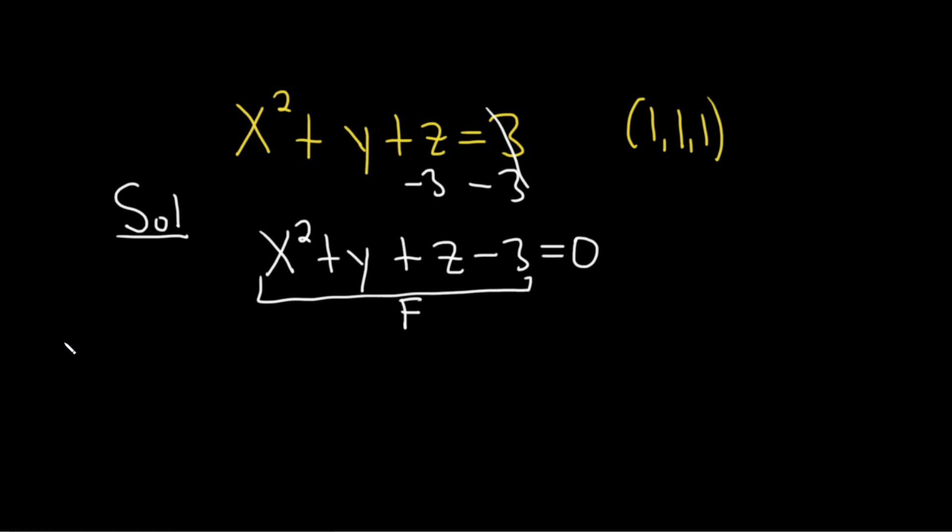And we're going to compute the gradient of big F. The gradient of big F of x, y, z is a vector and it's going to be orthogonal to our plane. So it's going to be the normal vector we're going to use to construct our plane.